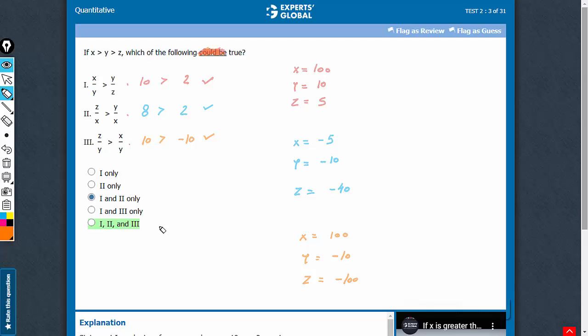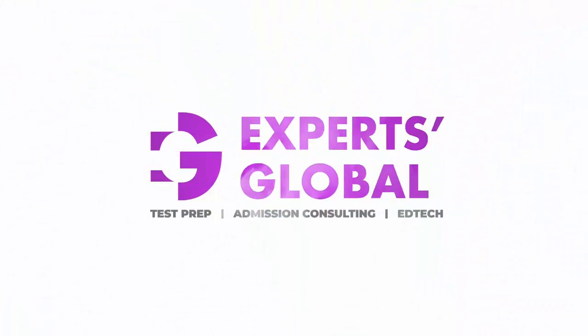1, 2, and 3 each could be true. Therefore, E is the correct answer choice.